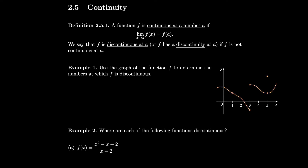Section 2.5: Continuity. A function f is continuous at a number a if the limit of f(x) as x approaches a is equal to f(a).